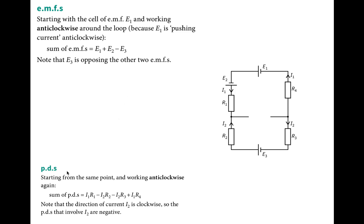Now for potential differences — I1 flows anti-clockwise, so the voltage across R1 is positive: plus I1R1. I2 flows clockwise, which is the negative direction, so the voltage across R2 is minus I2R2. Continuing around the loop, I2 through R3 is also negative: minus I2R3. Then I1 through R4 is positive again: plus I1R4.